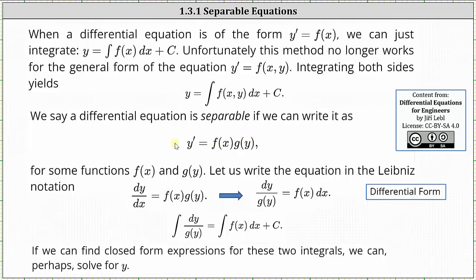If we have an equation in this form, using Leibniz notation, we can write the equation as dy dx equals f of x times g of y. From here, our goal is to get the y parts on the left and the x parts on the right. To do this, we divide both sides by g of y and then write the differential equation in differential form, which gives us dy divided by g of y equals f of x times dx.